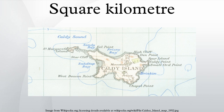1 acre equals 0.004046856 km², 0.4046856 ha, or 4046.856 m²; while 1 US survey acre equals 0.004046873 km², 0.4046873 ha, or 4046.873 m².